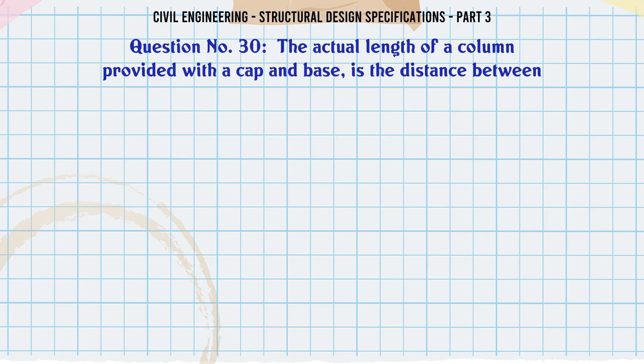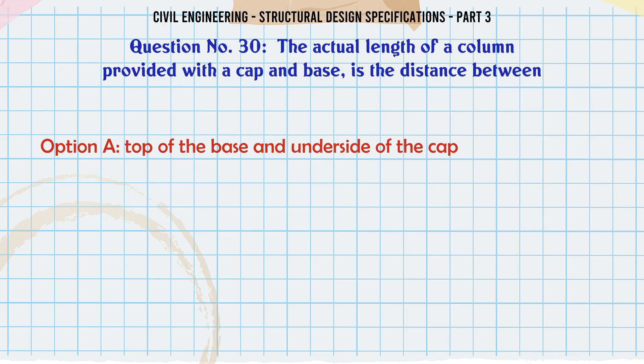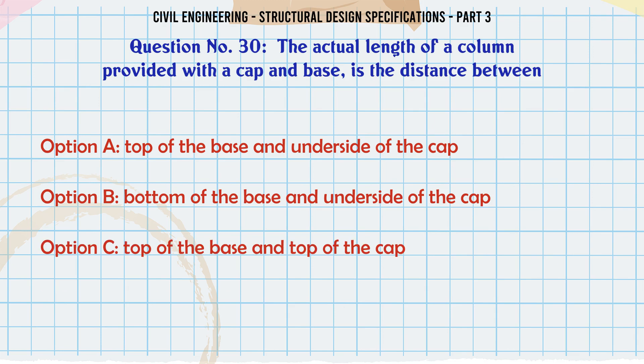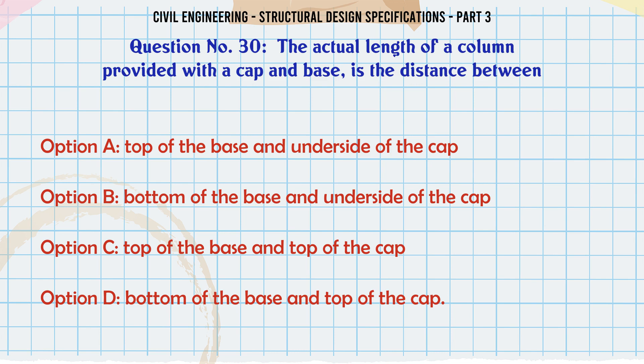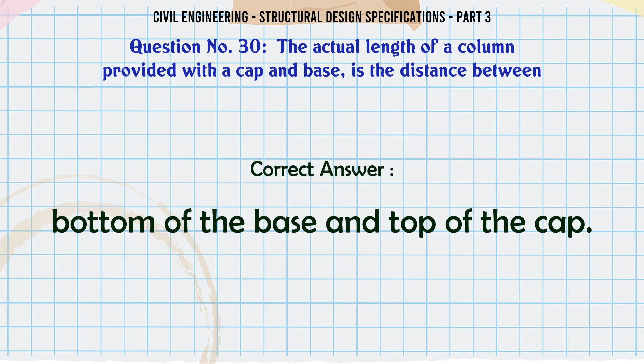The actual length of a column provided with a cap and base is the distance between: a. Top of the base and underside of the cap, b. Bottom of the base and underside of the cap, c. Top of the base and top of the cap, d. Bottom of the base and top of the cap. The correct answer is: bottom of the base and top of the cap.